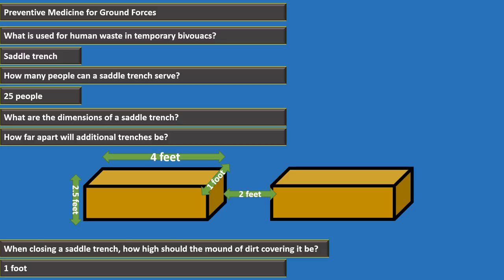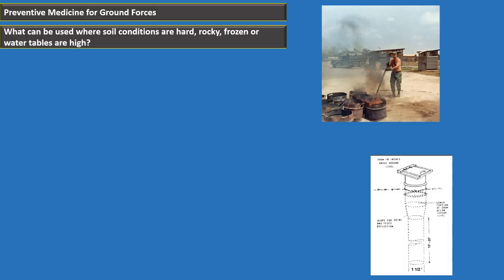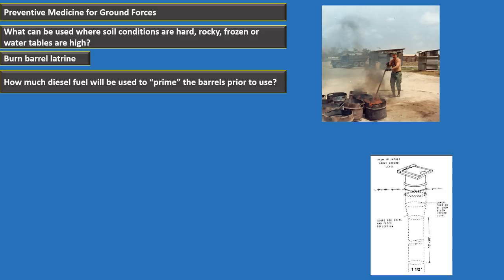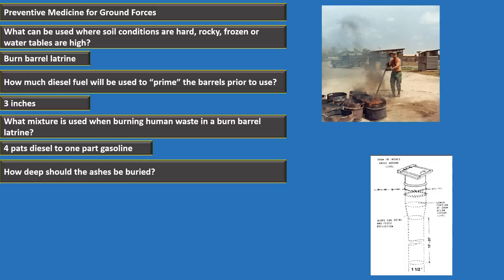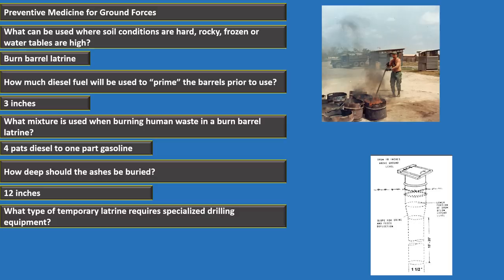The fuel mixture for burning human waste in a burn barrel is four parts diesel to one part gasoline. Bury the ashes at least 12 inches deep. A bored hole latrine requires specialized drilling equipment. A urine soakage pit is most effective in sandy soils. Its dimensions are four feet squared by four feet deep (4x4x4). The standard urine soakage pit has six tubes, each one inch by 36 inch pipe, with eight inches buried and approximately 26 inches above ground.